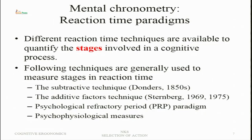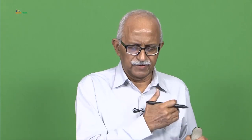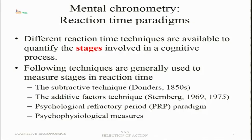There are different reaction time paradigms that quantify the stages involved in a particular cognitive process. The idea is to measure reaction time for certain tasks, then break down that reaction time into components corresponding to different stages. Generally, the following techniques are used: the subtractive technique by Donders — a classical technique about 170 years old — and the additive factors technique by Sternberg.